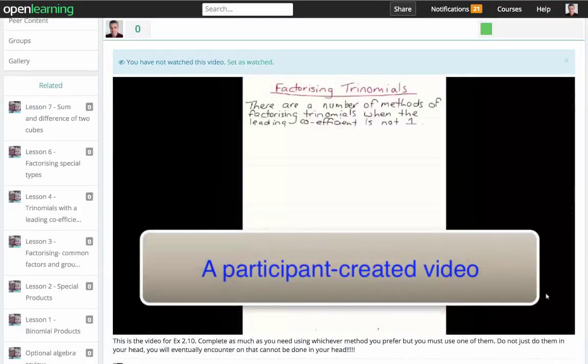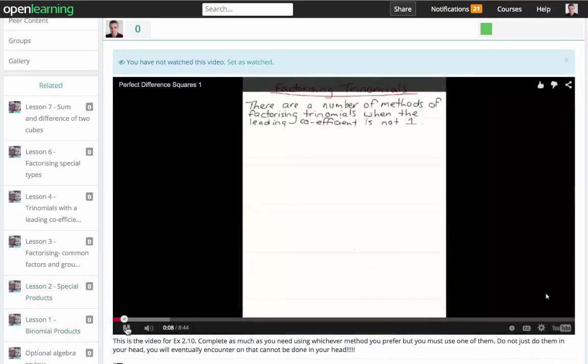Factorising trinomials where the leading coefficient is not one is more complicated than what we saw in the previous exercise.